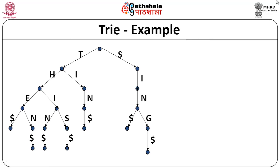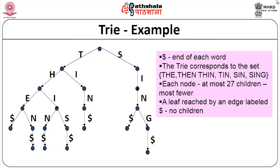Here is another example of a trie, again using dollar at the end of each word. Every trie corresponds to a set of words. The set here is: the, then, thin, tin, sin, and sing. Each node can have at most 27 children — 26 alphabets plus the dollar sign. The words have many common prefixes, which is one characteristic that makes tries appropriate.